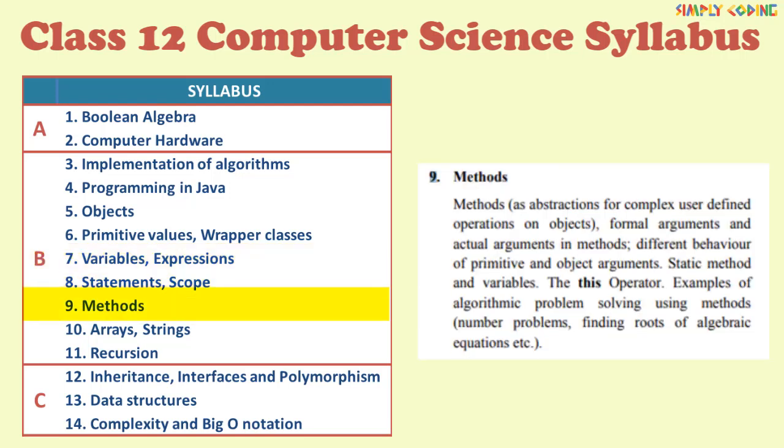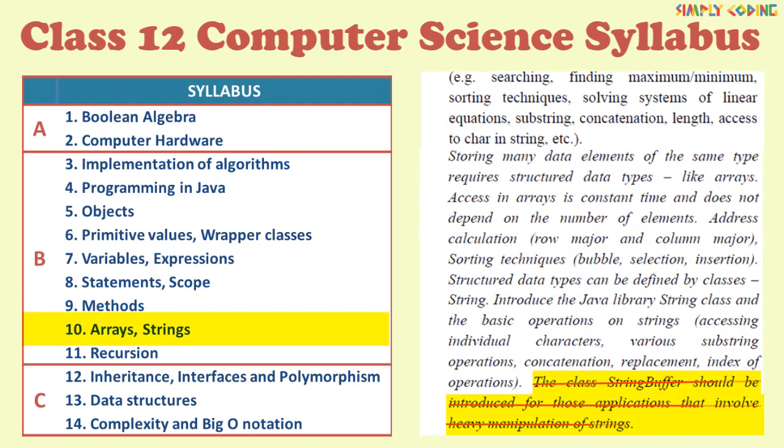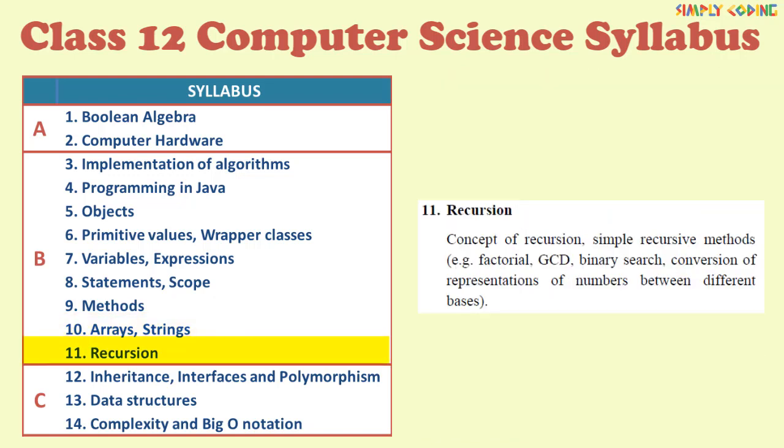Next in subsection 9 methods, objects as arguments is removed. Remaining is still in syllabus. In arrays and strings only change is that string buffer class is removed. Remaining is still in syllabus. There is no change in recursion chapter too.